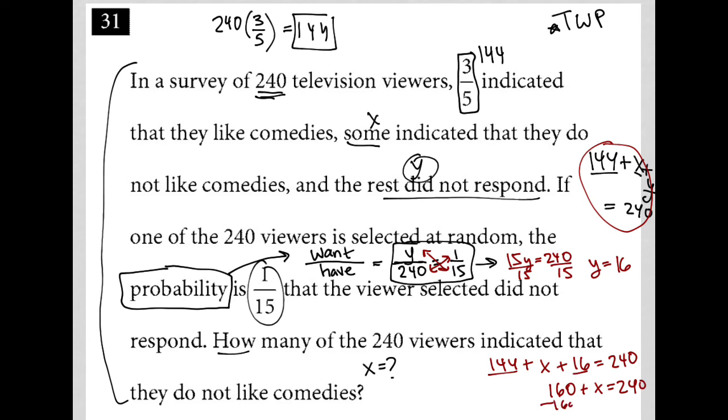And then, of course, I subtract 160 from both sides here. And I'm left with X is equal to 80. So X is 80. That's what we're looking for. X represents the number of the sum who indicated that they do not like comedies. So that's my answer here. The answer to number 31 is 80.